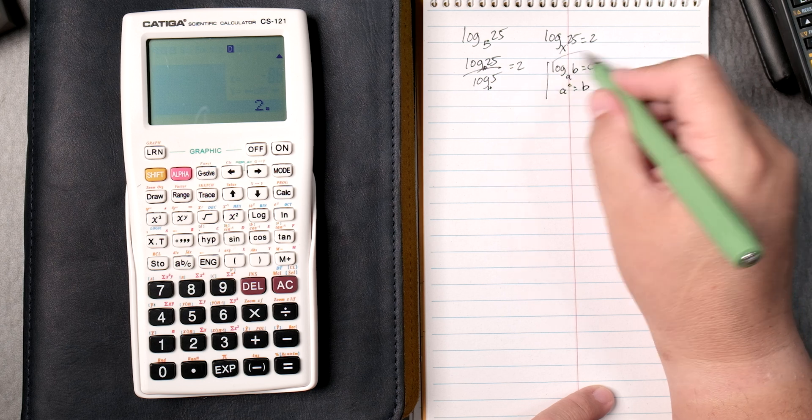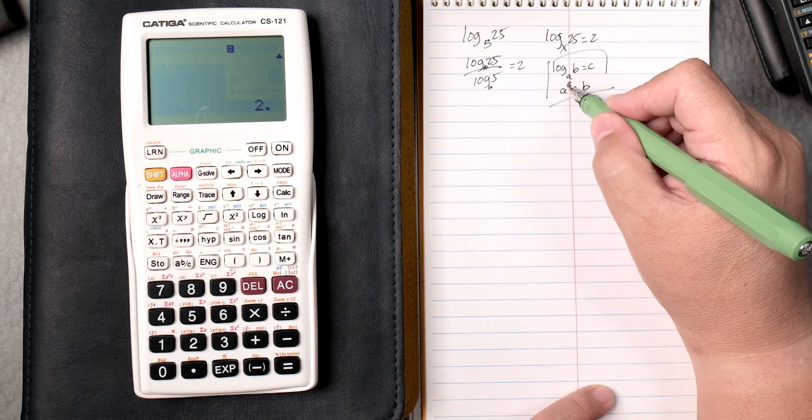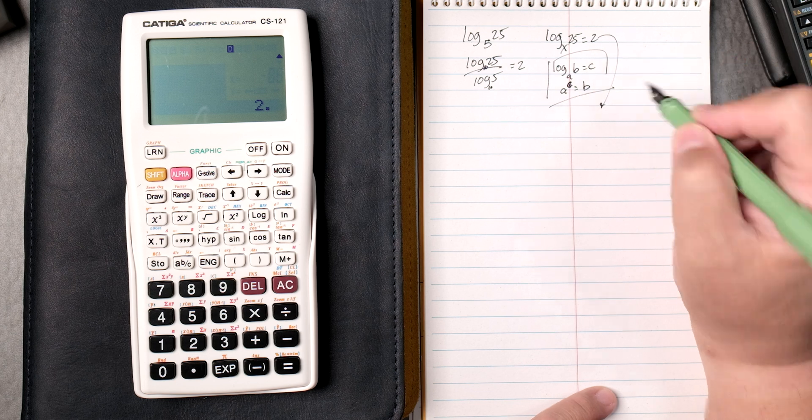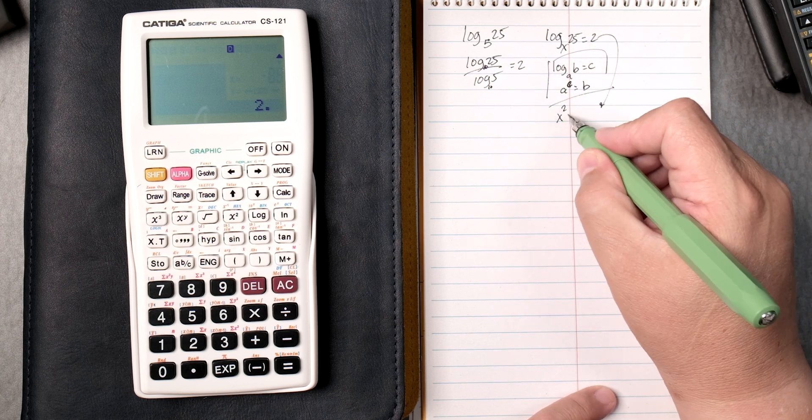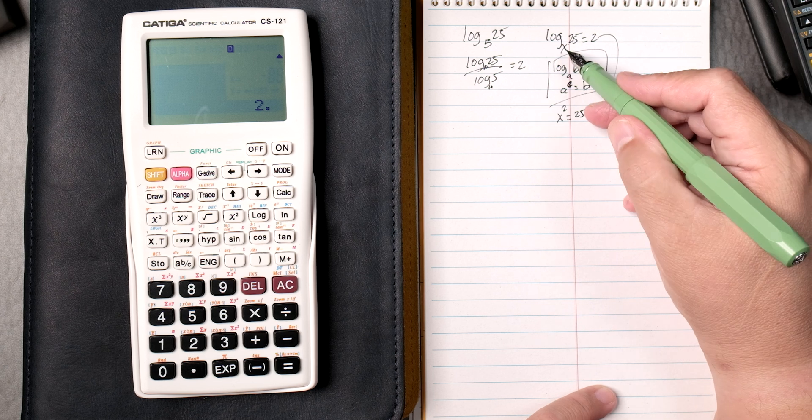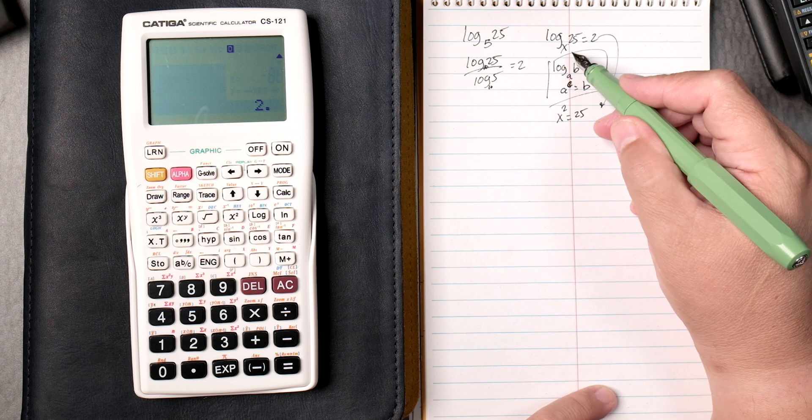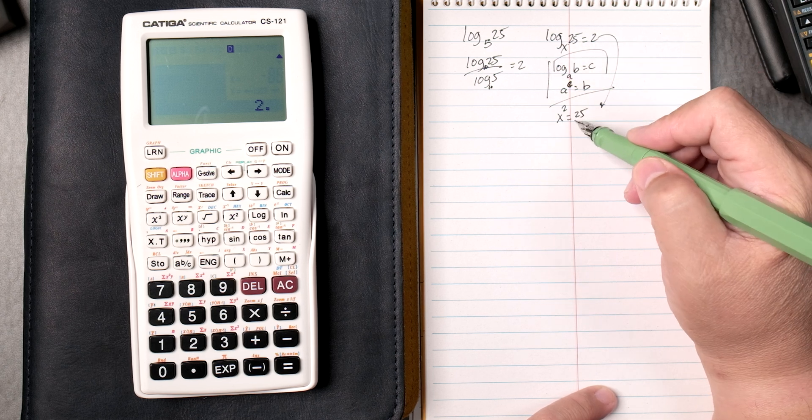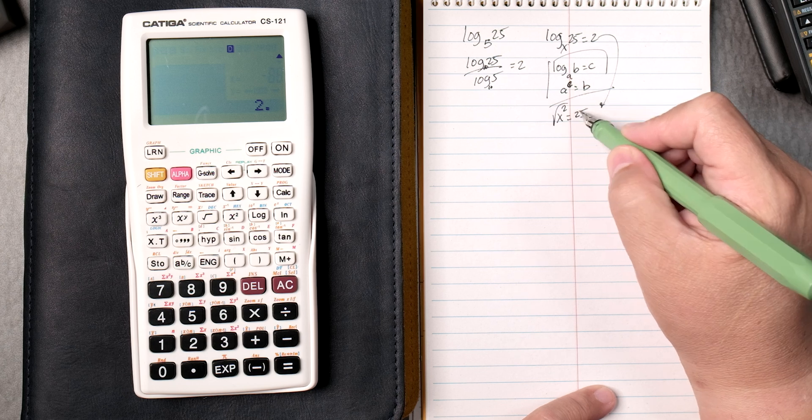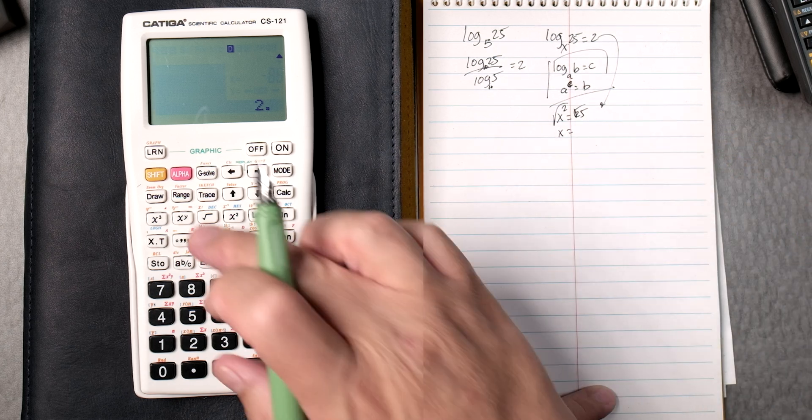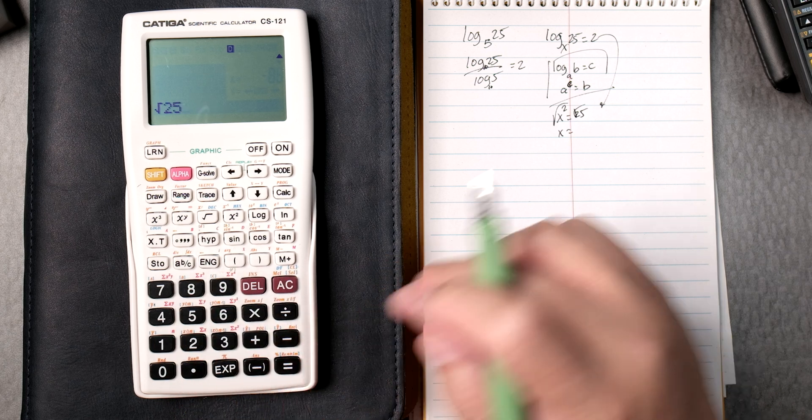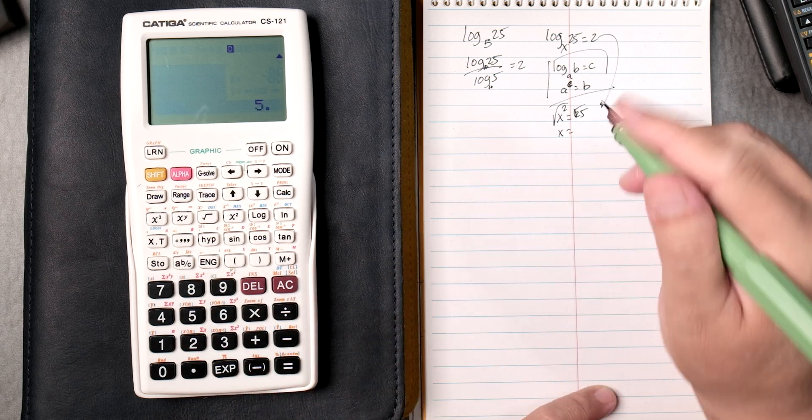So we can do that here. x squared equals 25. Base x times base x to the power of 2 equals 25. Then we take the square root on both sides. x equals square root of 25, which is 5. Square root 25, press equals, then we get 5.